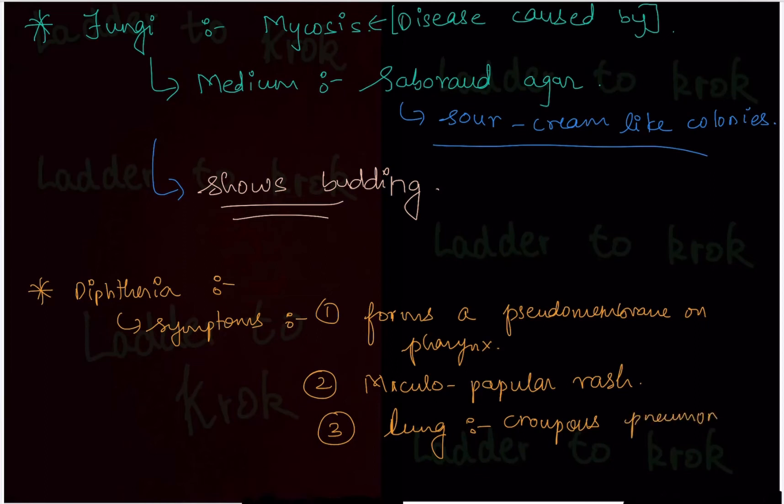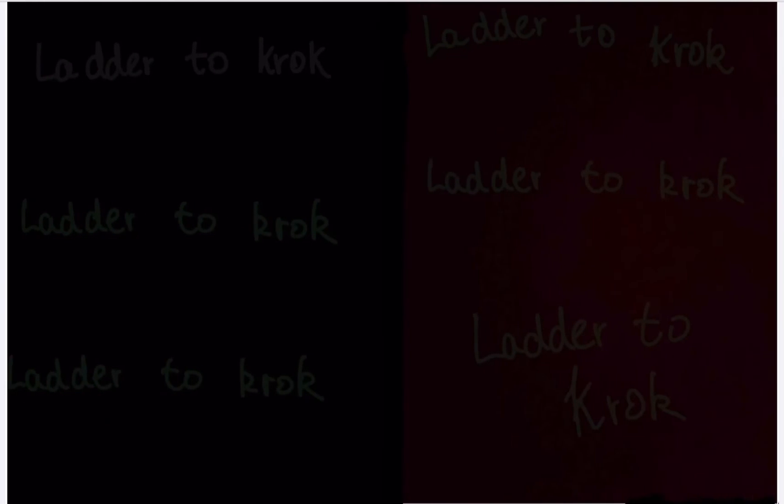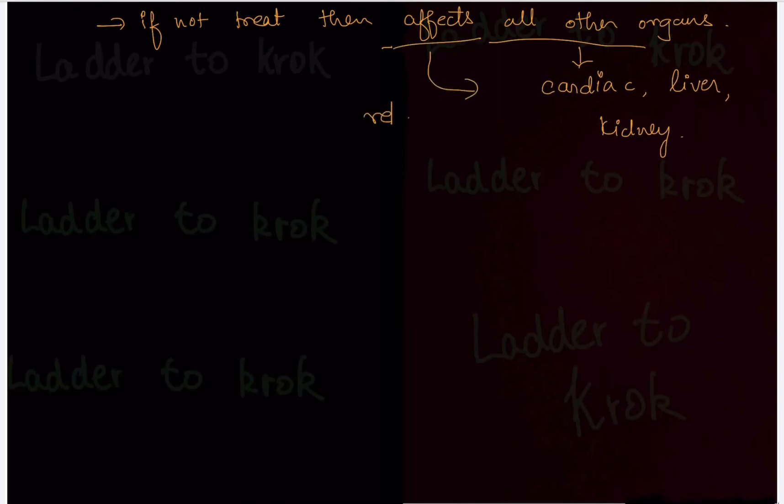And if we do not treat this, if we still not treat this diphtheria, then it affects all other organs. Now by all other organs here I mean it is going to affect your cardiac system, that is your heart, your liver, your kidney. And how exactly will it affect? It affects by releasing toxins. So this affects by releasing toxic action and therefore these organs will be affected, which one? The heart, liver, and the kidney.